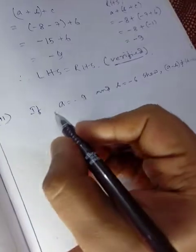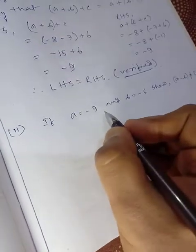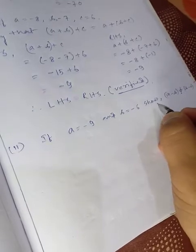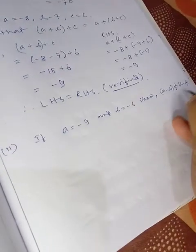Now the last problem of our discussion. The question says if a = -9 and b = -6, show that a - b is not equal to b - a.